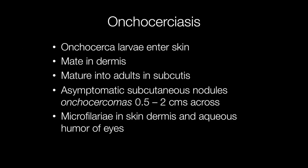The larvae enter the skin, mate in the dermis, and mature into adults in the subcutaneous tissue, resulting in the formation of asymptomatic nodules called Onchocercomas, which are around 0.5 to 2 cm in diameter. The major problems occur when the microfilariae released by the females enter the dermis and the eye chambers.